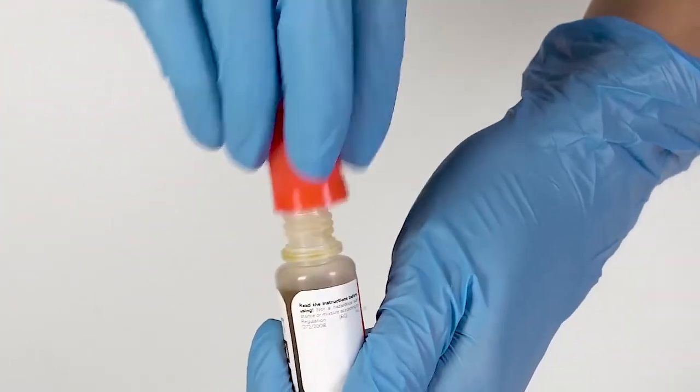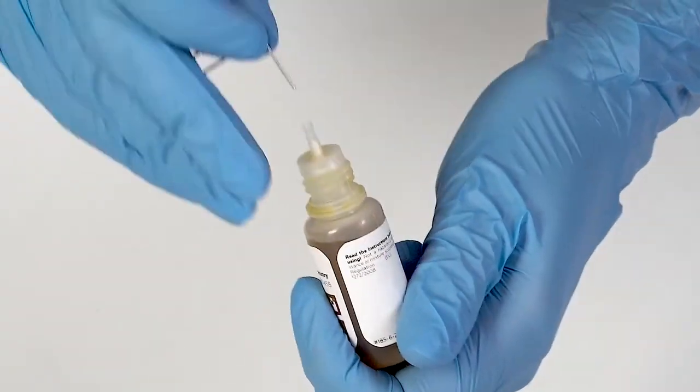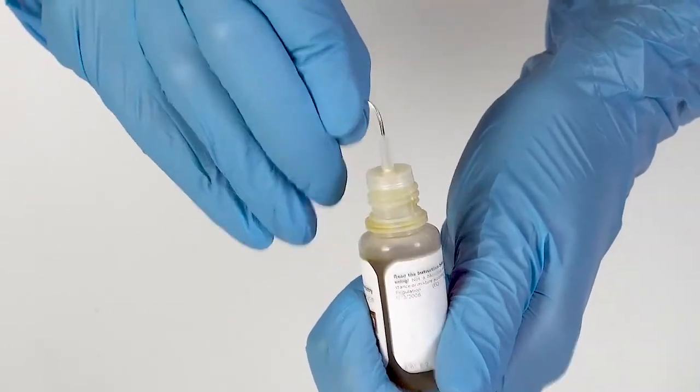To open a bottle containing a reagent, push the cap down and turn it. Pierce the bottle nozzle with an unbent paper clip.